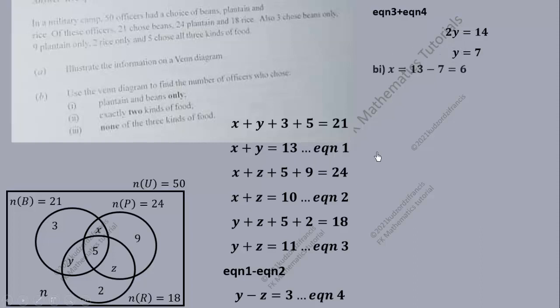Now that we know y, we can answer the question: find the number of officers who chose plantain and beans only, which is x. From equation 1, x = 13 minus y. Since y = 7, x = 13 minus 7 = 6. So those who chose plantain and beans only are 6 officers.